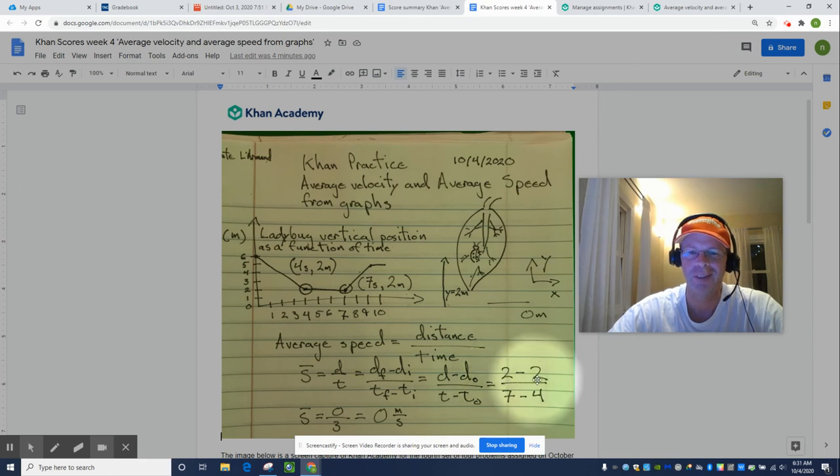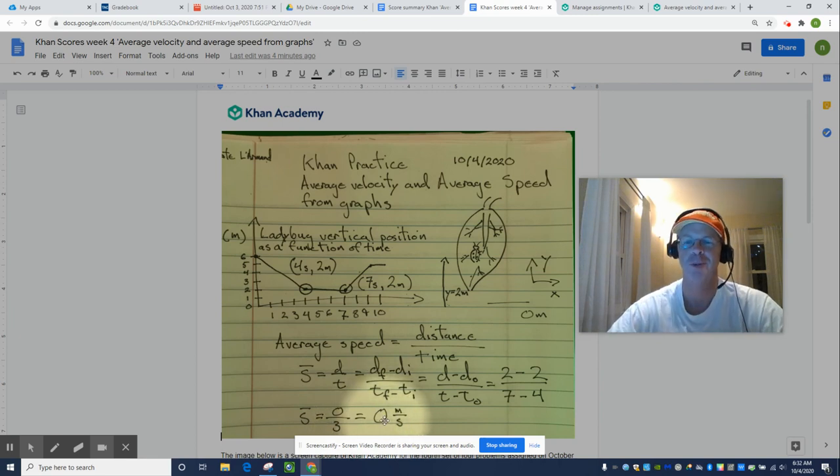Well, we started at two meters and ended at two meters. So we didn't go anywhere. And it took us three seconds to go nowhere. So three seconds is the left-right shift. And change in y is the change in vertical position. But there is no change in y in this graph. So we're basically finding slope. The slope of this region is zero. So our average speed is zero meters per second.